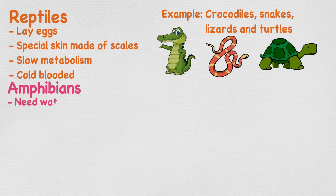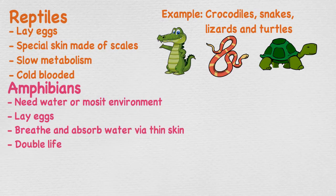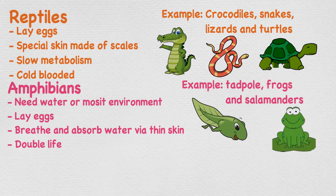Amphibians are small vertebrates that need water or a moist environment to survive. They lay thousands — and sometimes millions — of small soft, jelly-like eggs in the water. All can breathe and absorb water through their very thin skin. The meaning behind 'amphibian' is 'double life,' as the early part of their life is spent in the water, and as they grow they spend time on land. An example is a tadpole, which grows into a frog — this process is called metamorphosis.